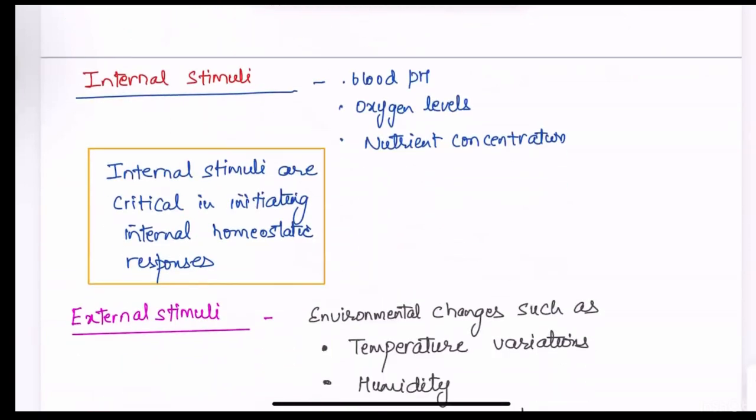Internal stimuli include blood pH, oxygen levels, nutrient concentration. Internal stimuli are critical in initiating internal homeostatic responses. So, if there is any change in the blood pH, that will be considered as an internal stimuli.